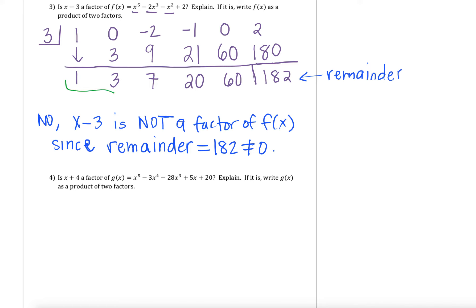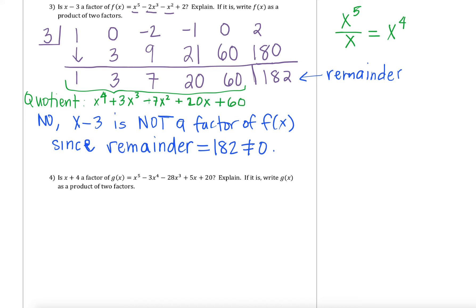Just for practice, I do want us to practice writing out our quotient so that we get familiar with it. We have to pay close attention to the polynomial we started with. We started with an x to the fifth and divided out by a linear term, which leaves us with x to the fourth as our highest power. So these coefficients of 1, 3, 7, 20, and 60 are going to start off with 1x to the fourth, plus 3x cubed, plus 7x squared, plus 20x, plus a constant term of 60. We have to keep in mind it's based off of what our power was when we began, and we drop down one power since we divided through by a linear term.